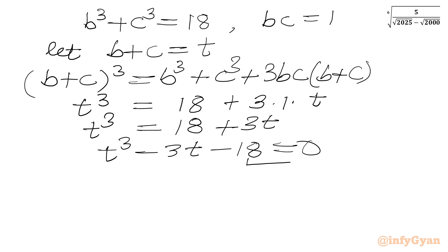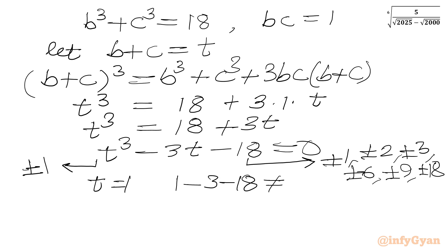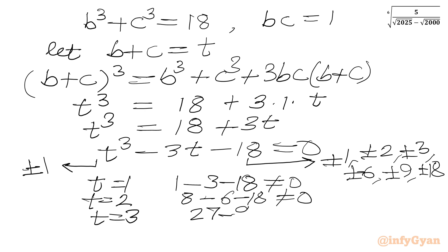We find the factors of 18: plus or minus 1, 2, 3, 6, 9, 18. The leading coefficient is 1, so possible rational roots include plus or minus 1. Testing t equals 1: 1 minus 3 minus 18, which does not equal 0. Testing t equals 2: 8 minus 6 minus 18, which does not equal 0. Testing t equals 3: 27 minus 9 minus 18 equals 0. Yes, so t equals 3 is our base solution.